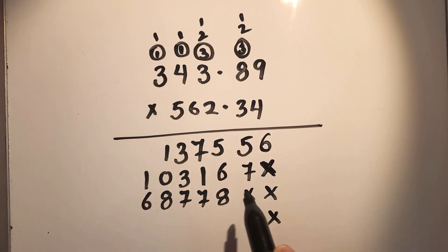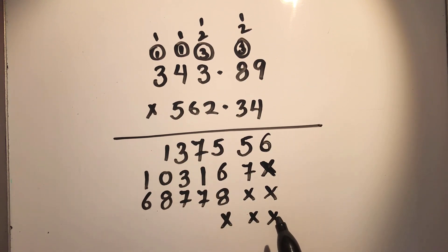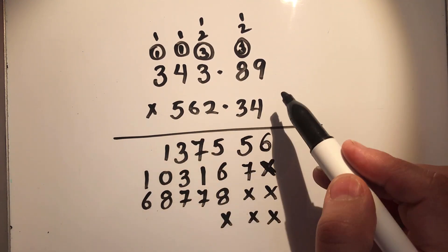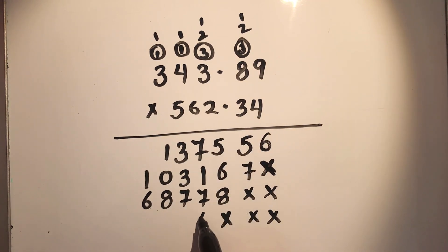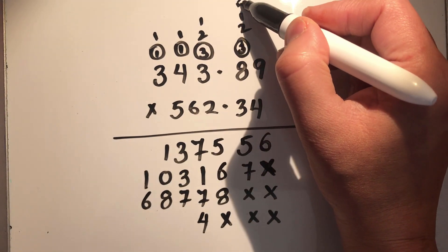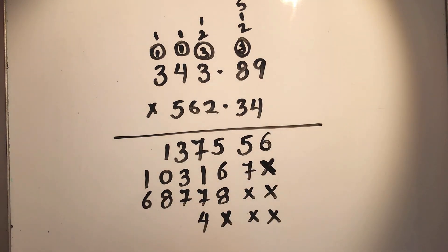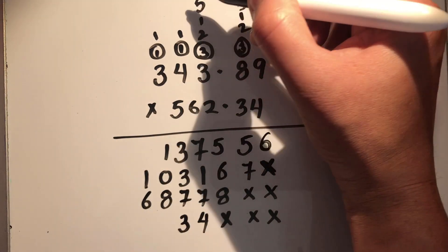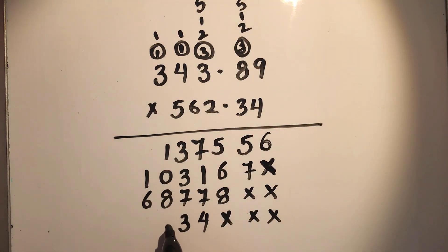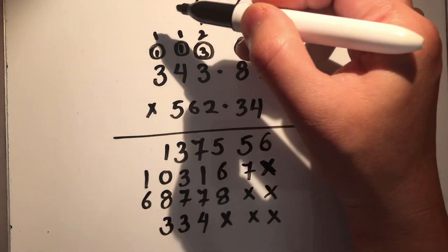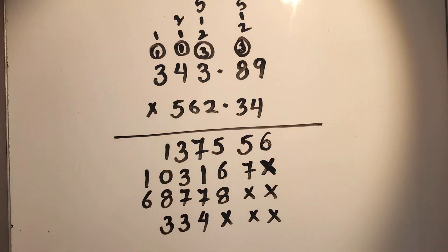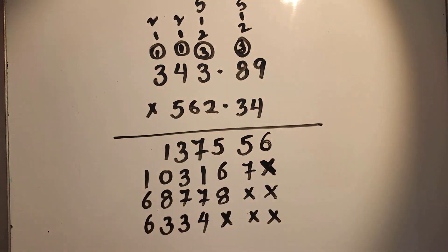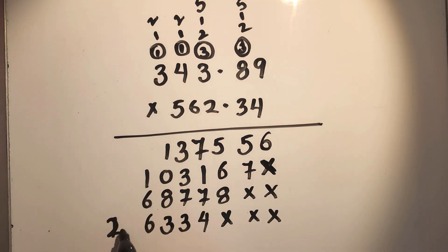Now we move on to the next number, which is 6. As we move on to each next number, we keep on adding zeros here. So 6 times 9 is 54. 6 times 8 is 48, plus 5 is 53, 5 carry over. 6 times 3 is 18, plus 5 is 23, so 3 and 2 carry over. 6 times 4 is 24, plus 2 is 26, and 2 carry over. So 6 times 3 is 18, plus 2 is 20.